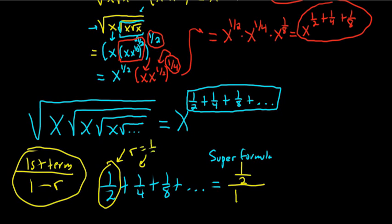And r is your common ratio. It's the number that you multiply to get from 1 half to 1 fourth. Well, in this case, r is 1 half. So to get from 1 half to 1 fourth, you multiply by r. So it's 1 half over 1 minus 1 half. This is 1 half over 1 half. So that's equal to 1. So this infinite sum is equal to x to the 1.